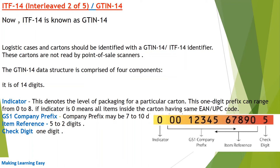The check digit is used to confirm if the code is valid or not. You can also represent GTIN-8, GTIN-12, or GTIN-13 in the form of GTIN-14 by adding the